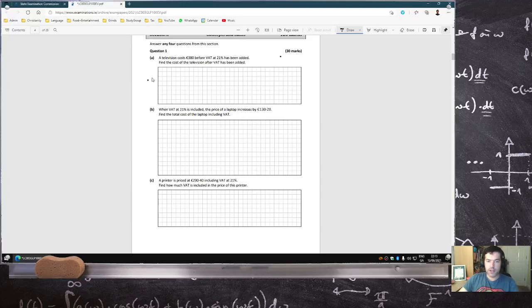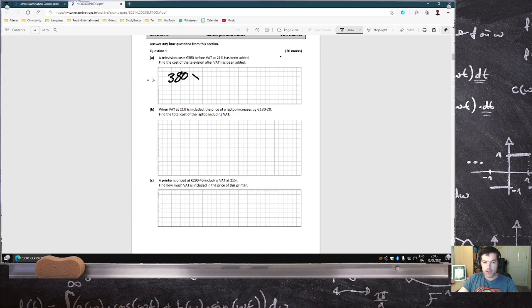Let's have a look. Television costs 380 before VAT at 21%. Find the cost of television after VAT has been added. Okay, 380 times 1.21, 459.80.